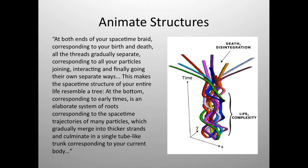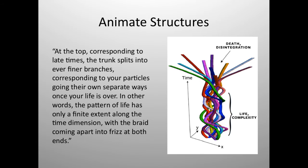At both ends of your space-time braid corresponding to your birth and death, all the threads gradually separate, corresponding to all your particles joining, interacting, and finally going their own separate ways. This makes the space-time structure of your entire life resemble a tree. At the bottom, corresponding to early times, is an elaborate system of roots corresponding to the space-time trajectories of many particles, which gradually merge into thicker strands and culminate in a single tube-like trunk corresponding to your current body. At the top, corresponding to late times, the trunk splits into ever-finer branches, corresponding to your particles going their own separate ways once your life is over. In other words, the pattern of life has only a finite extent along the time dimension, with the braid coming apart into frizz at both ends.